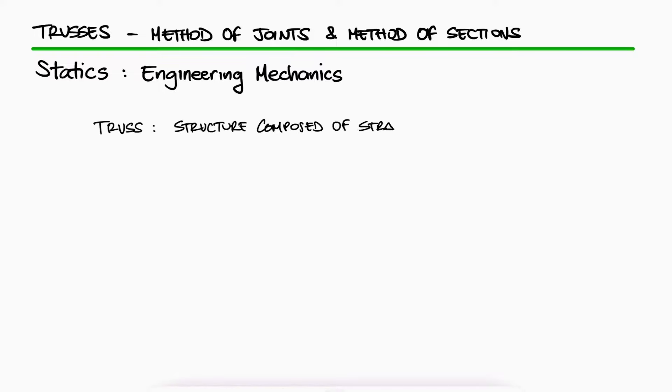A truss is a structure composed of straight members joined together at their endpoints. They are most commonly used in bridges, roofs, and towers.